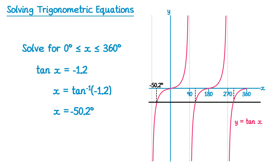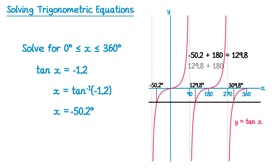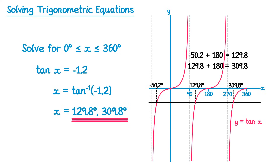Because tan repeats every 180 degrees, we just add 180 to negative 50.2, getting 129.8. Then we add 180 to that to get the next one: 129.8 plus 180 is 309.8. We don't want the negative solution, so our two valid solutions are 129.8 and 309.8 degrees.